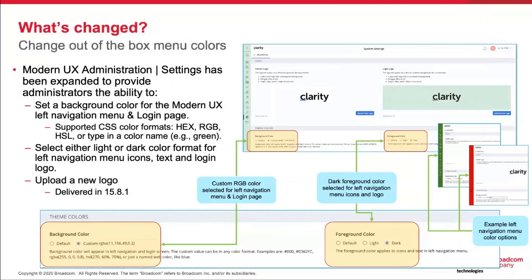We're going to run through some visuals here covering these capabilities. The top part of the branding page was dedicated to inserting a company logo or icon to brand the use of Clarity — essentially removing the default PPM branding or adding something more personal. The lower section is dedicated to a background color for the left-hand navigation or something behind the logo. You can add anything that supports CSS — a hex, RGB, or HSL — or even type in the word 'red' or 'green' and it'll pick that up. The other aspect is a foreground color: do you want the icons on the left-hand side to be light or dark?